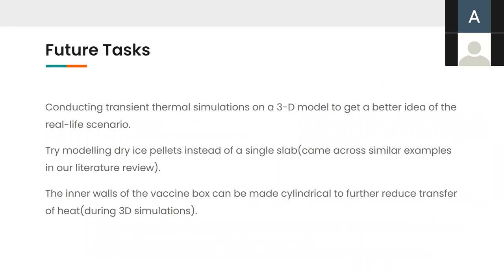So, once we found out the calculation, what can be done further? So, we can conduct transient thermal simulations using a 3D model to get a better idea of how the real scenario will look like. We can also try modeling the dry ice in the form of pellets instead of a single slab. This we came across in some literature and the inner walls of the vaccine box can be made cylindrical to reduce further transfer of heat. This can be done during 3D simulations because in 1D mode, it will be similar to that of a rectangle. Thank you.